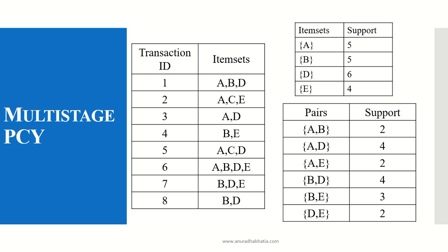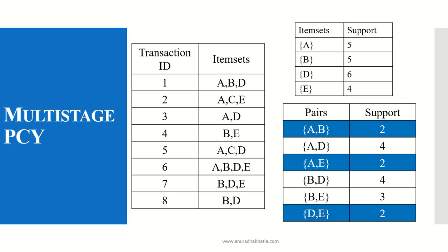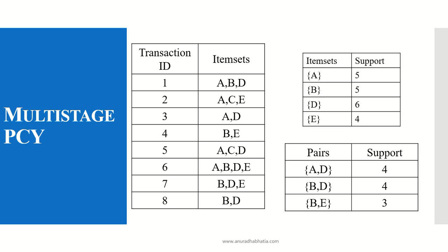From the qualified items a, b, d, and e, we form pairs and again find the support from the original transaction ID table. We find that the pair a,b has a support of 2; a,e has a support of 2; and d,e has a support of 2. Since all three have support less than the given minimum of 3, these three pairs are rejected. The L2 set formed from the second candidate will have supports 4, 4, and 3.